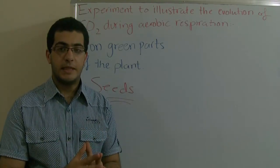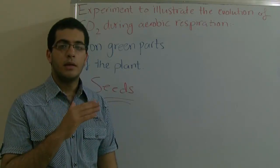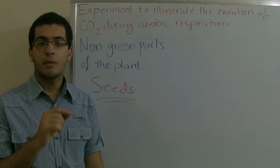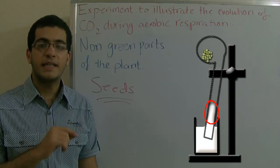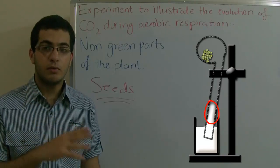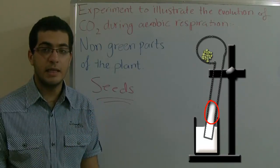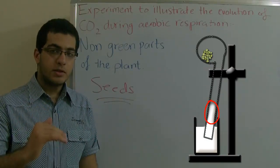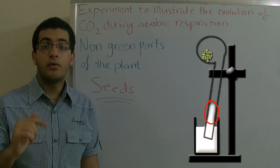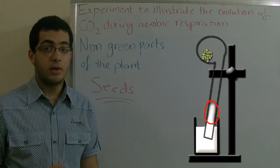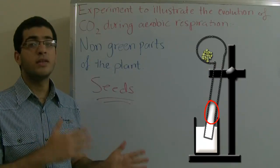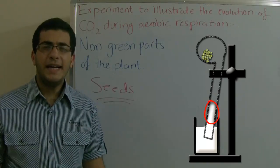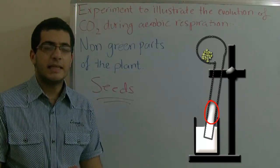We will notice that the solution of potassium hydroxide will rise in the third retort, which contains germinating seeds — its level will rise through the neck of the retort — while no change occurs in the other two. So why is this?